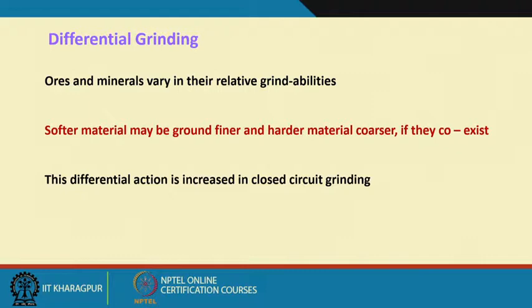Differential grinding exploits the fact that ores and minerals vary in their relative grindabilities. A typical example is grinding coal, which has a softer organic (coal vitrite) part and a harder mineral (shell) part that is essentially silicate material. So there will be differential or preferential grinding of the coal vitrite part. Many minerals have different grindability properties, and where you want to grind only the softer material relative to others, you use differential or preferential grinding operations.